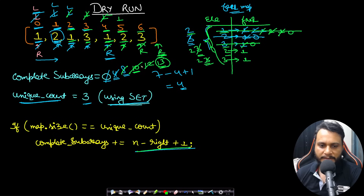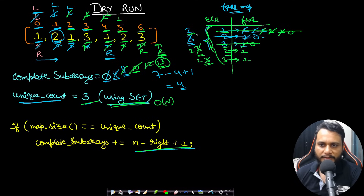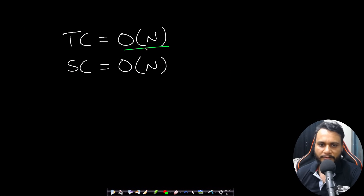In this process, the initial step of building the set takes O(n) time to find the unique count. After that we iterate through the array once, with each element visited at most twice via the left and right pointers. Pushing and popping from the map is O(1). So the overall time complexity is O(n) and the space complexity is O(n) due to the set and the hashmap.